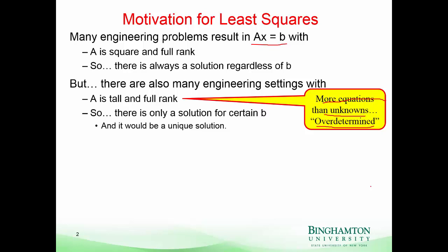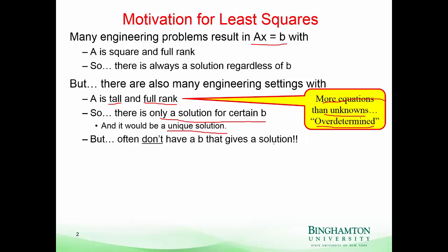We've seen already that when we've got a tall matrix, there's only a solution for certain B — specifically, any B that lies in the column space of A. Coupled with the full-rank requirement, that solution, if there is one, will be a unique solution. The problem is that in these engineering settings, we often don't have a B that gives us a solution, so we're in a situation where there is no solution to the equation.